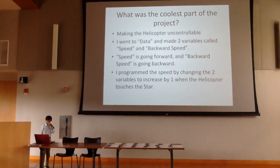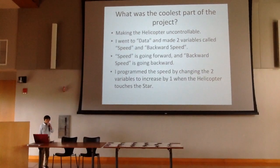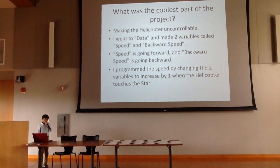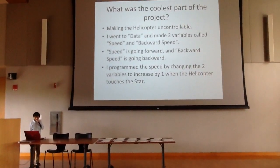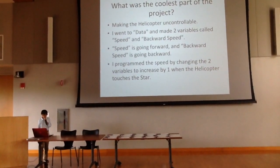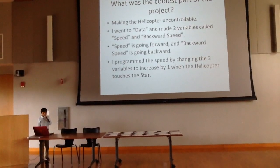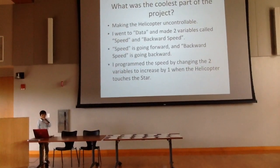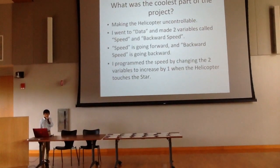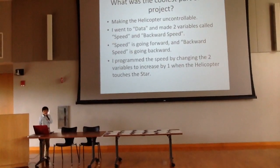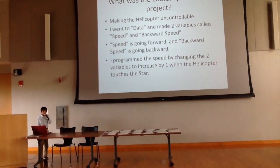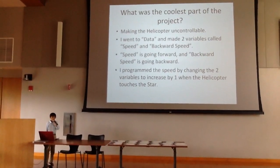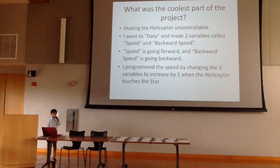What was the coolest part of the project? For me, making the helicopter uncontrollable. How did I do that? I went to data and made two variables called speed and backward speed. I programmed the speed by changing the two variables to increase by one when the helicopter touches the star. Therefore, as the game progresses, it gets harder and harder and the helicopter flies faster and faster and nearly impossible to control.